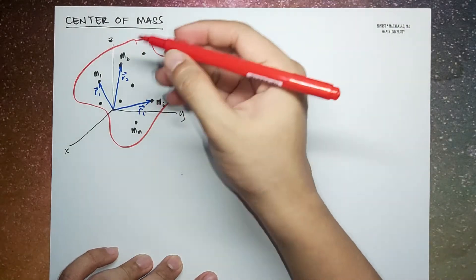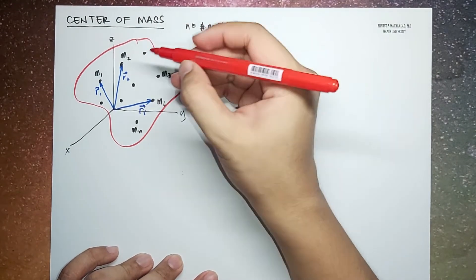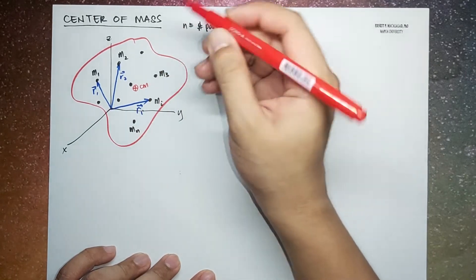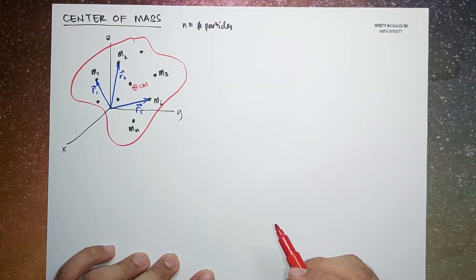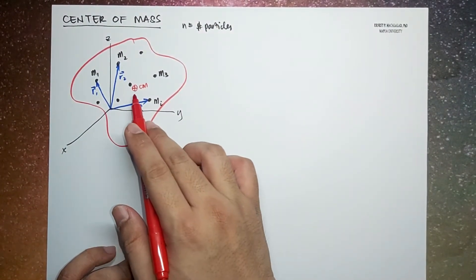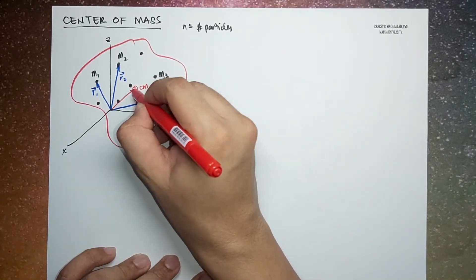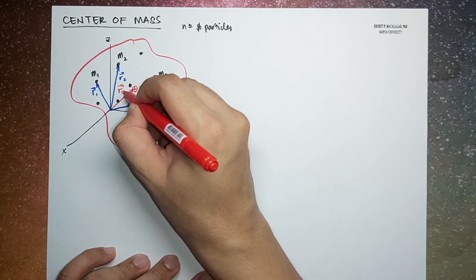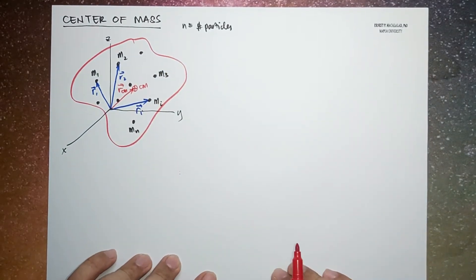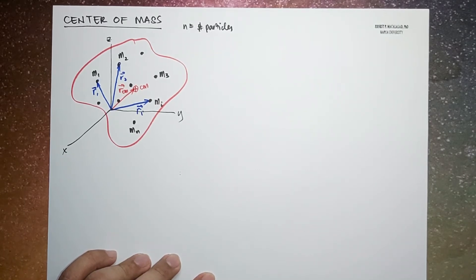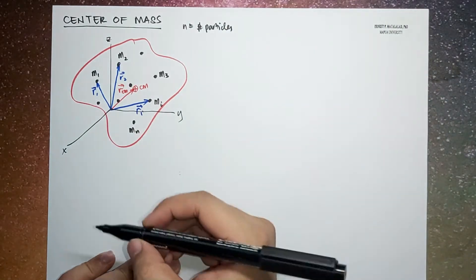This system of particles has a center of mass. Let's say the center of mass is located somewhere here — we'll call that CM. The position of the center of mass of the system is represented by the position vector R_cm.